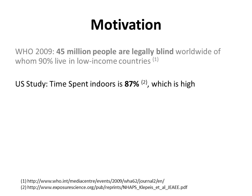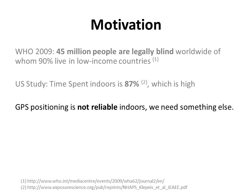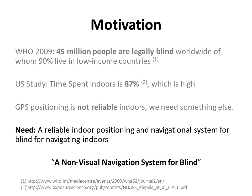One study tells that for an average user, the percentage of time spent within a building is 87%, which is quite high, and of which more than 15% of the time is spent in unfamiliar indoor places. The highly successful outdoor positioning system with GPS cannot provide reliable indoor positioning. So there is a clear need for a robust and reliable indoor positioning and navigation system with special requirements for blind and low vision users in a non-visual navigation system.